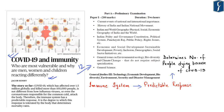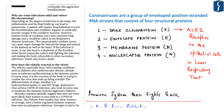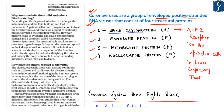Our immune system's fight against coronavirus will determine the number of people dying from the virus. Coronaviruses are a group of enveloped positive-stranded RNA viruses consisting of four structural proteins: spike glycoprotein (S protein), envelope protein (E protein), membrane protein (M protein), and nucleocapsid protein (N protein). Of these, it is the S protein — the spike protein — which binds with the receptor on epithelial cells of the lower respiratory tract and causes the most damage.